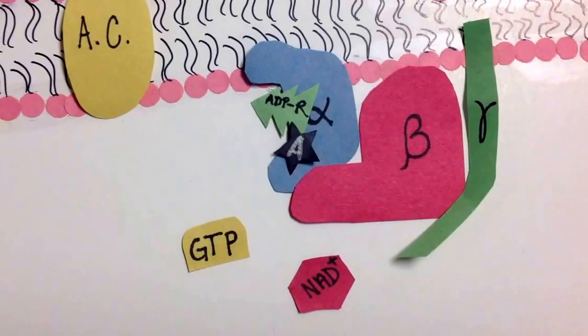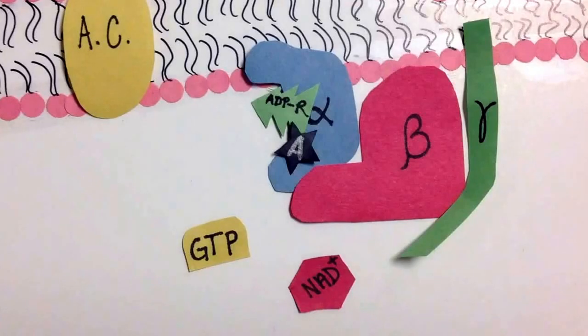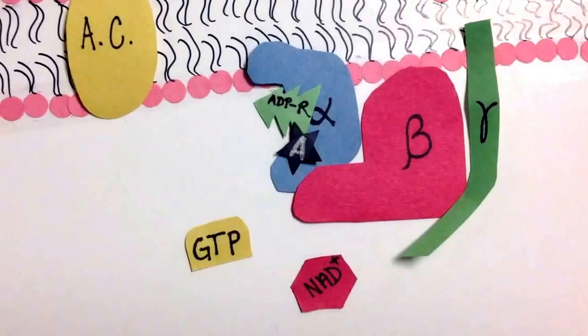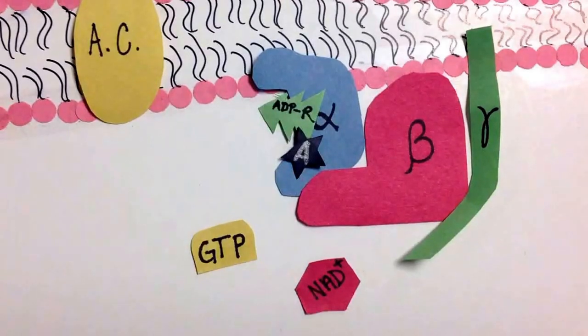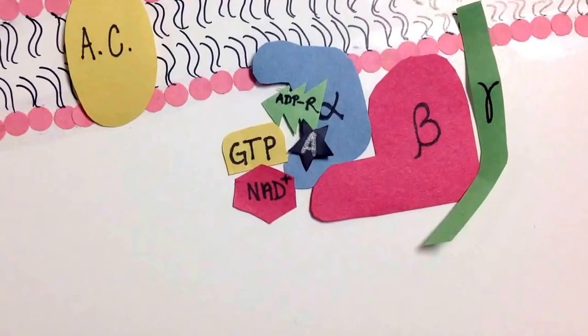The addition of NAD plus ADP ribose covalently modifies a G protein. The presence of ADP ribose prevents GTP hydrolysis and therefore produces an active G protein, which binds and stimulates adenylate cyclase.